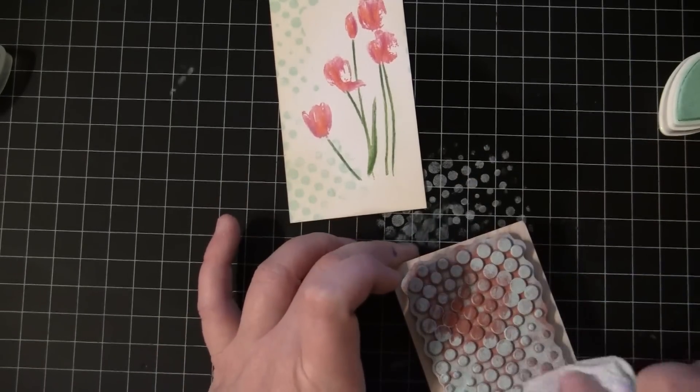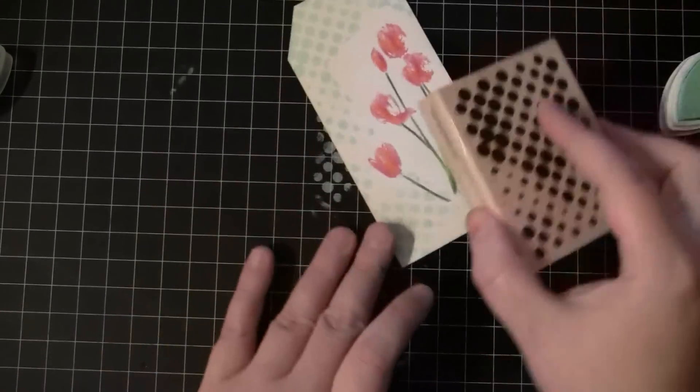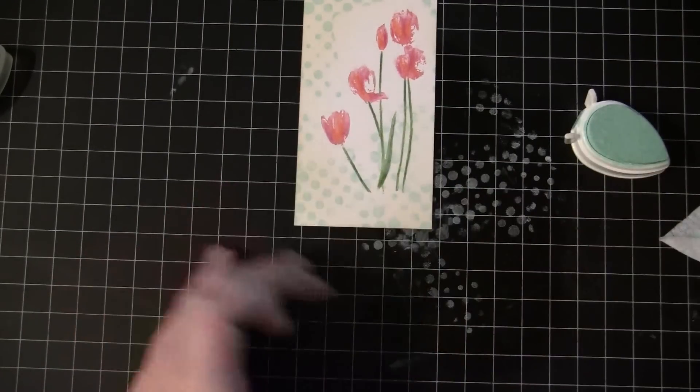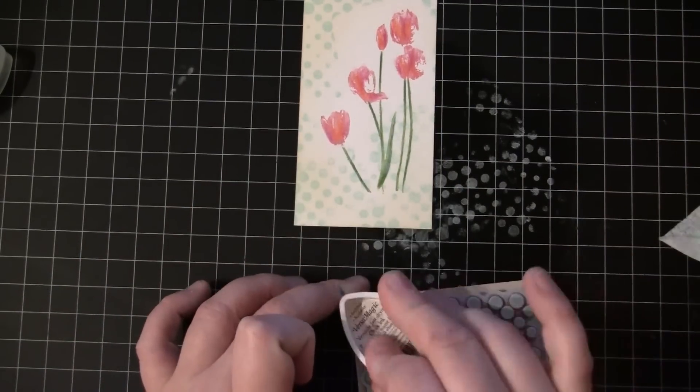And I really wanted this to have sort of a vintage, sort of messy look, so I am sort of turning the stamp each time as I stamp it so that it's not perfectly uniform.